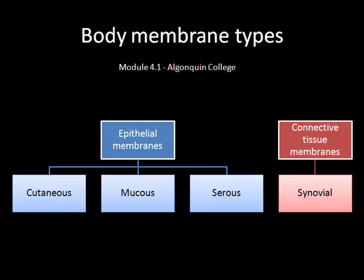There are four basic types of body membranes. Three are epithelial membranes: the cutaneous, mucus, and serous membranes. And the fourth type, the synovial membrane, is a type of connective tissue membrane.